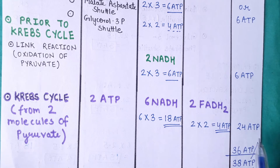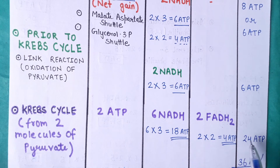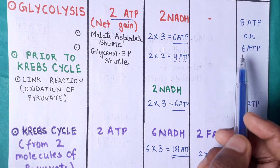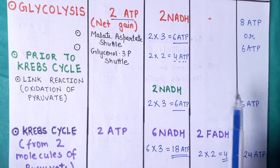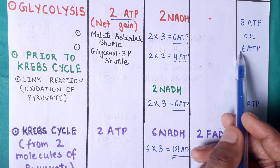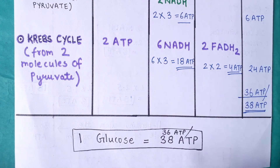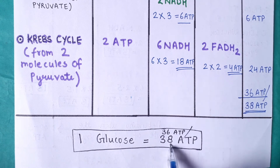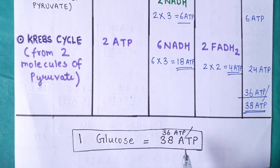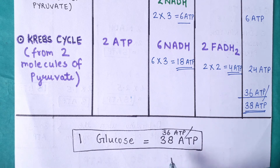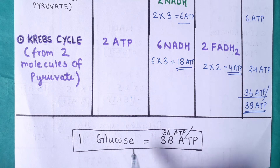Adding all values: 24 ATP from Krebs cycle plus 6 ATP from pyruvate oxidation is 30 ATP, plus either 8 ATP or 6 ATP from glycolysis, gives a net gain of either 38 ATP or 36 ATP. That variation between 36 and 38 ATP is due to the type of shuttle system used after glycolysis. So according to the old concept, one molecule of glucose gives either 36 or 38 ATP.